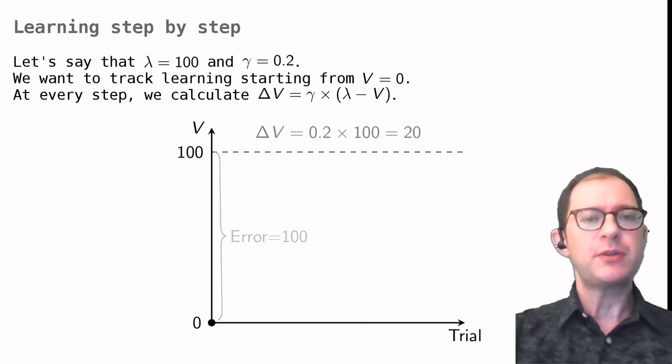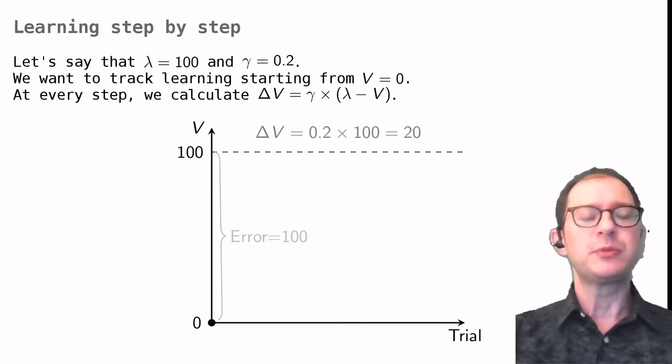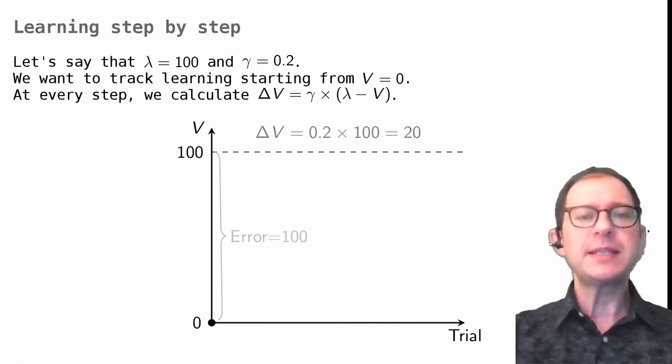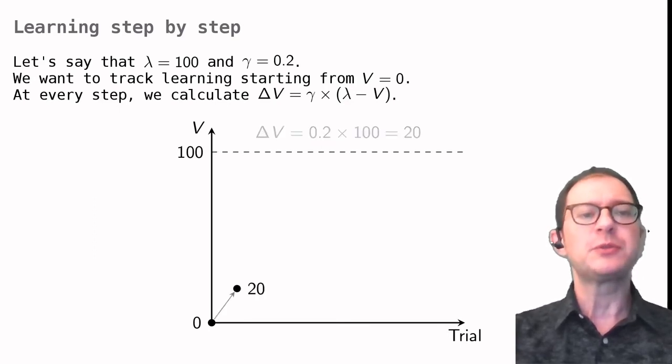So, according to the Rescorla-Wagner model, the change in associative strength will be 0.2 times 100, that is 20. This means that after the first CS-US experience, the associative strength will jump from 0 to 20.